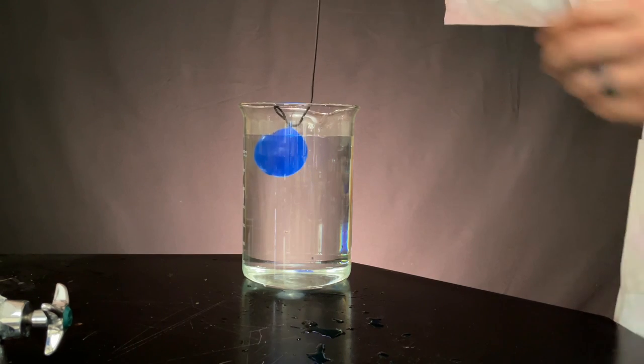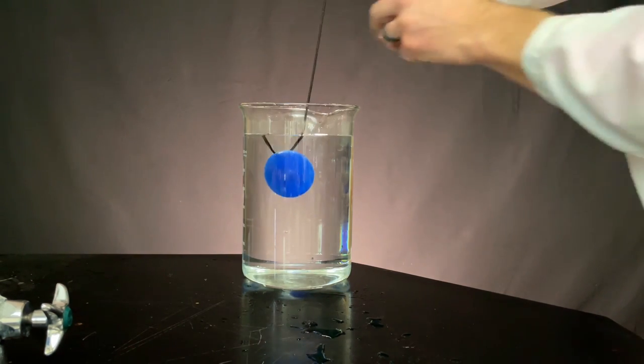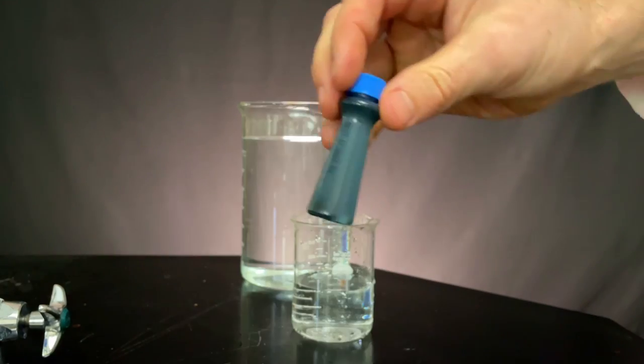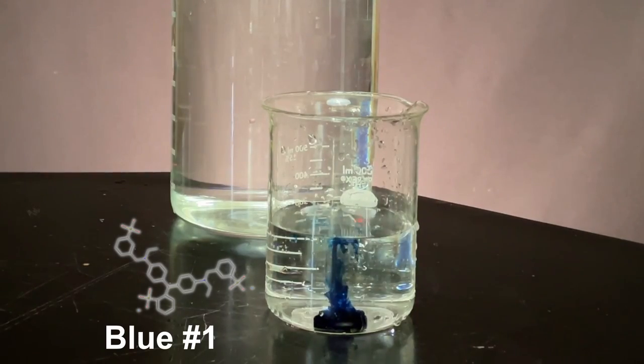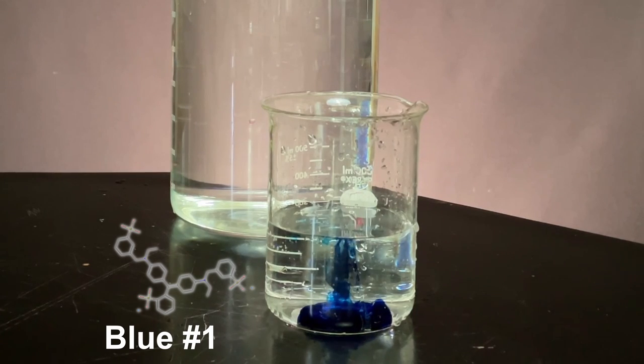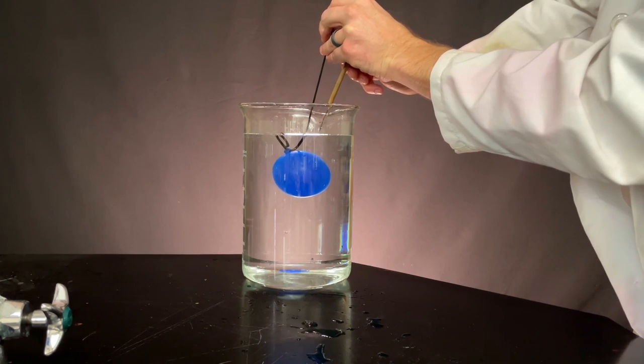Do you think this will be any different than the room temperature water? Think the dye will hold its shape a little better or worse? Blue dye is blue number one, which looks like this. Remember, green was a mix of blue number one and yellow five. So I'm curious which diffuses faster. Let's see.